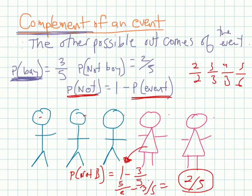And that's it. So if you want to know the probability of something not happening, an event not happening, it's one minus the probability of the event happening. Good luck. See you in the next section.